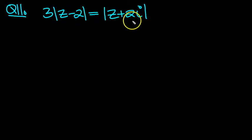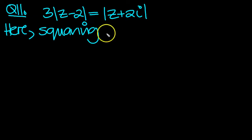3 modulus z minus 2 is equal to the modulus of z plus 2i. Let's have a look at that here then. What have we got here? Squaring, let's square both sides and get the Cartesian representation first. So squaring gives...